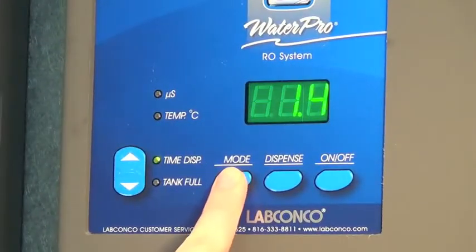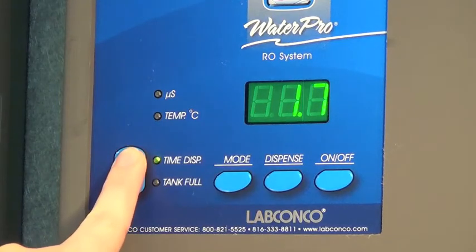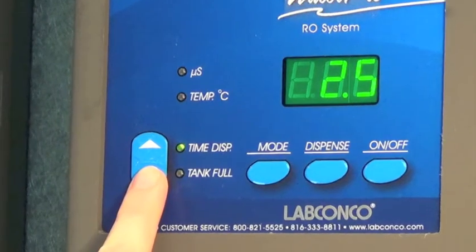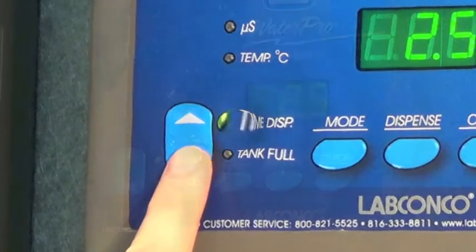Selecting time dispense allows the user to increase or decrease the amount of time in minutes the system will dispense water from its dispense valve. Use the arrow keys to adjust the time dispense setting.